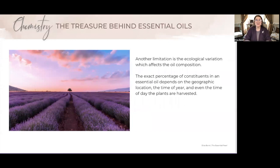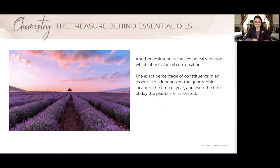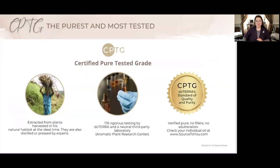Another limitation is ecological variation, which affects oil composition. The exact percentage of constituents in an essential oil depends on the geographic location, the time of year it's harvested, and even the time of day. The minerals in the soil, the seasons, the amount of rain and sun — all of these need to be ideal in order for that plant to have the strongest compounds. Not only does where a plant comes from affect its chemistry, but also how and when the raw materials are harvested, how they're distilled, the pressure used, and the timing.